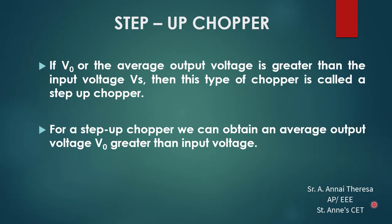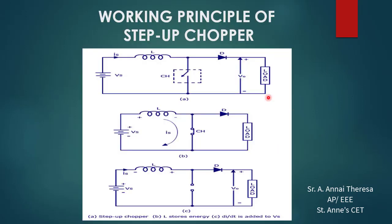We already know what a step up transformer is — if the secondary voltage is higher than the primary voltage, it is called a step up transformer. In the same way, a step up chopper is one where the output voltage is greater than the input voltage. So we will get an output voltage which is greater than the input voltage. This is called a step up chopper.